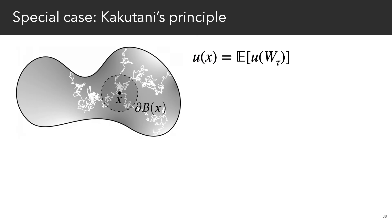A special case of Feynman-Katz is Kakutani's principle, which says that the solution to a Laplace equation is just the average value seen by a Brownian random walker when it first hits the boundary.